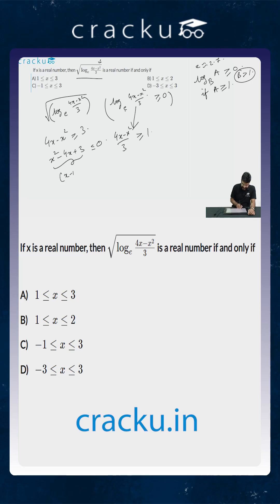You can factorize this as x minus 1 into x minus 3 has to be less than or equal to 0. This would imply that x must belong between 1 and 3.